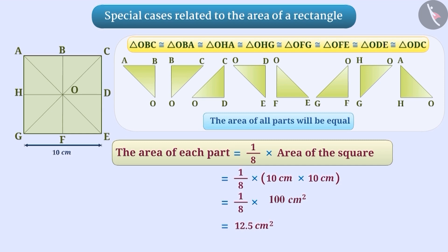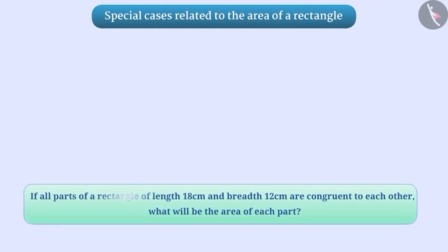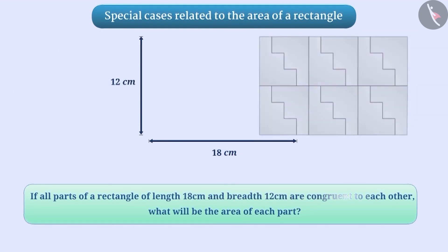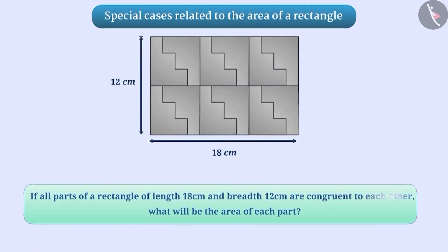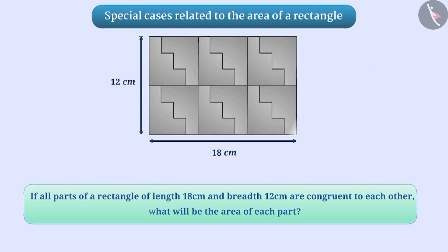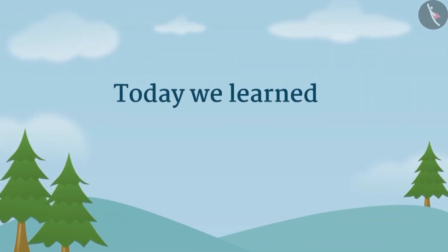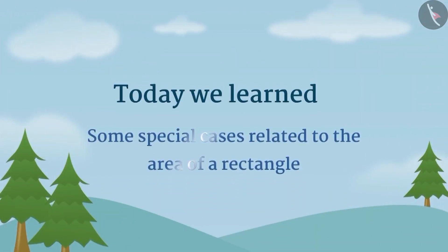Now find out for yourself if all the parts of the rectangle of length 18 cm and breadth 12 cm are congruent to each other, and what will be the area of each part. Today, we learned about some special cases related to the area of a rectangle.